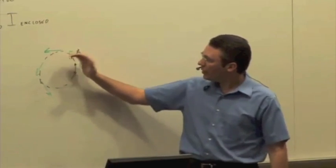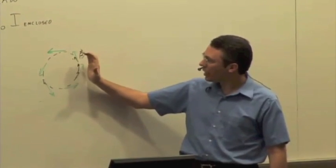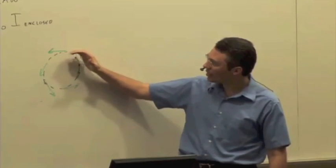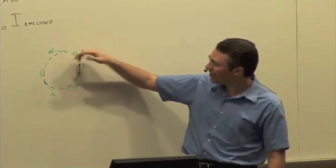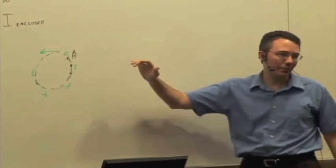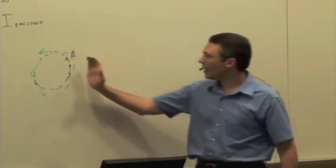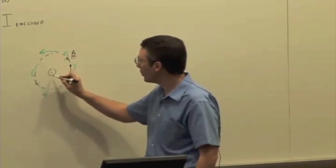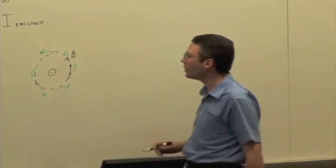You go around in the counterclockwise direction, and if you choose your right hand and your fingers curl around in the direction that you're traversing this path, then your thumb gives you the positive direction. So in this case, if I go around and I get a positive value, that's telling me that there's conventional current coming out in the positive direction.